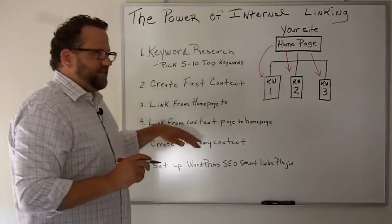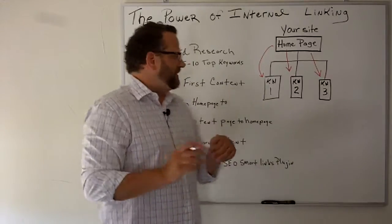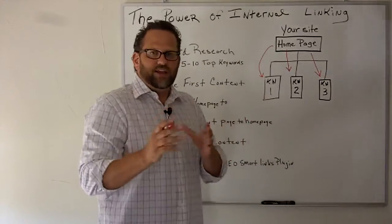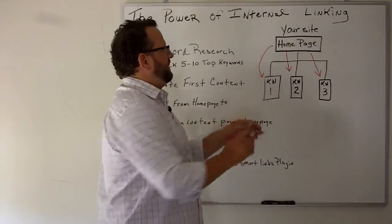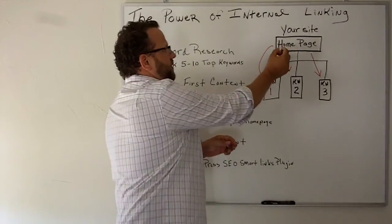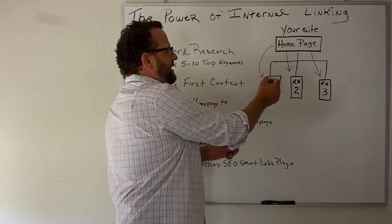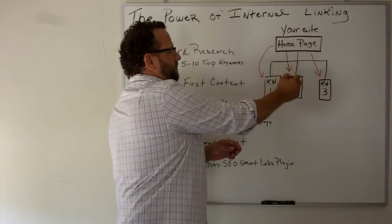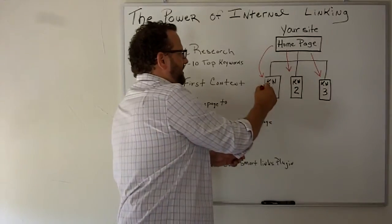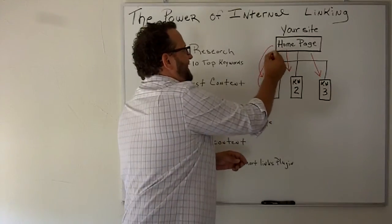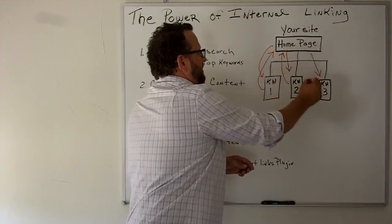The fourth step is now to link from your content page back to your home page. But when you link from your content page you want to use your main keyword. So for example, if this is our home page we would have a link that says white tea and then black tea and then oolong tea. Now when we link from our content page we're just going to use the word tea.